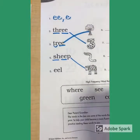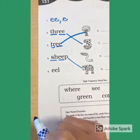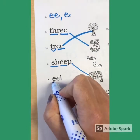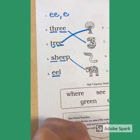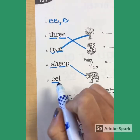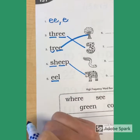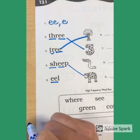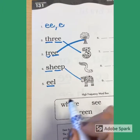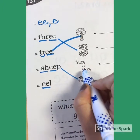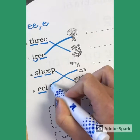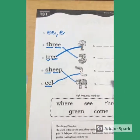Last one. Anything in this word we can code? Yep — digraph EE. And then L will make its normal L sound. So EE-L. Eel. An eel kind of looks like a worm, but it swims. This is an eel — it has a fin on it. Awesome.